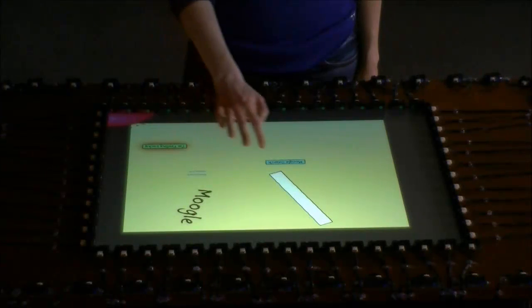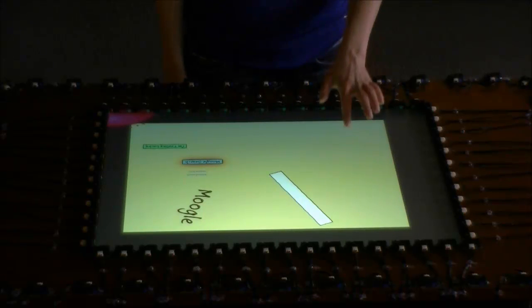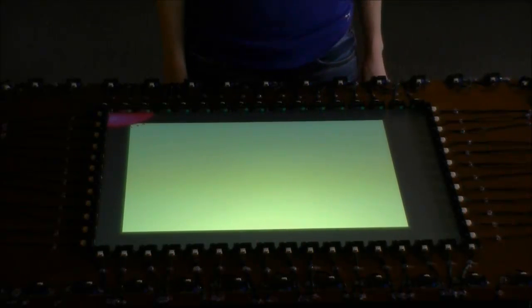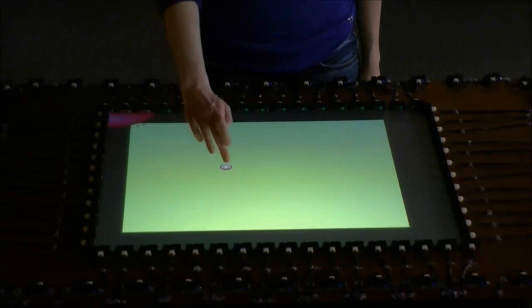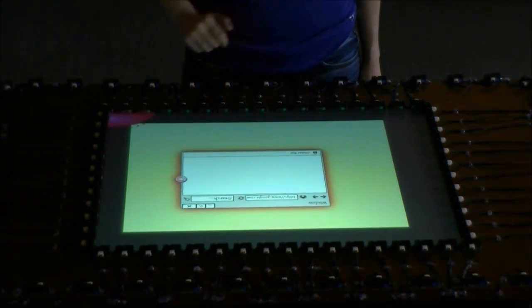With ProxySketch, different commands are assigned to each hand. For example, dangerous actions, such as clear the canvas, are hidden unless the user taps the sketching canvas with their non-dominant hand. When the user touches the sketching canvas with their dominant hand, a marking menu appears, allowing the user to perform more common actions.